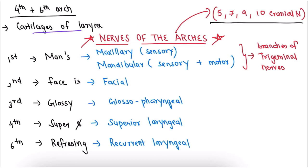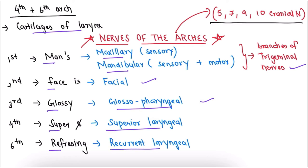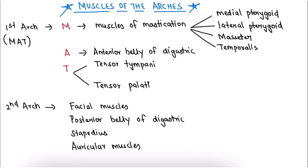Moving on to the nerves of the pharyngeal arches. The nerves can be remembered by the mnemonic 'man's faces glossy super and refreshing': M for maxillary and mandibular branches of trigeminal nerve (first arch), F for facial nerve (second arch), G for glossopharyngeal nerve (third arch), S for superior laryngeal nerve (fourth arch), and R for recurrent laryngeal nerve (sixth arch).